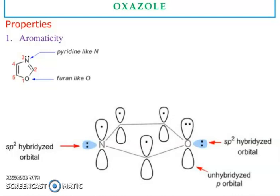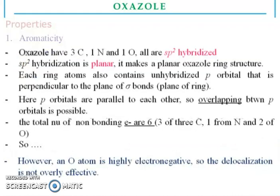Aromaticity. You can see here oxazole contains oxygen and nitrogen and this is the five-membered ring. You can see the sp2 hybridized orbital, you can see unhybridized p-orbital, you can also see sp2 hybridized orbital. So, oxazole has three carbons, one nitrogen, one oxygen and all are sp2 hybridized. sp2 hybridization is planar. It makes a planar oxazole ring structure.